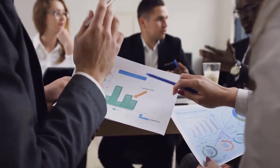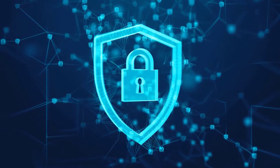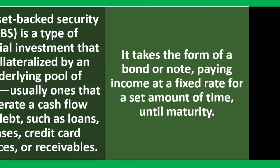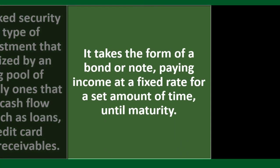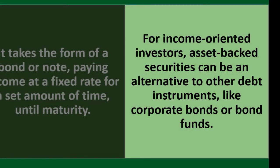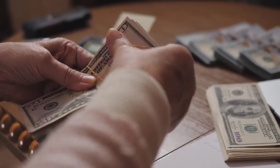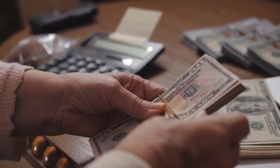Another investment tool is the asset-backed security, which helps support or secure the investment. It takes the form of a bond or note paying income at a fixed rate for a set amount of time until maturity — similar in structure to a bond or fixed-income instrument. For income-oriented investors, an ABS can be an alternative to other debt instruments like corporate bonds or bond funds.